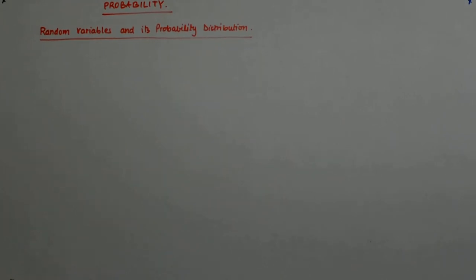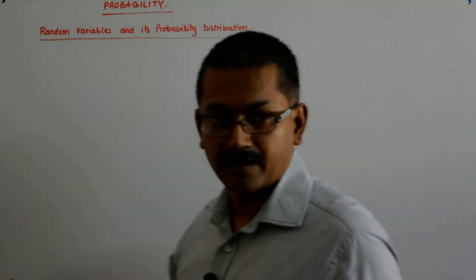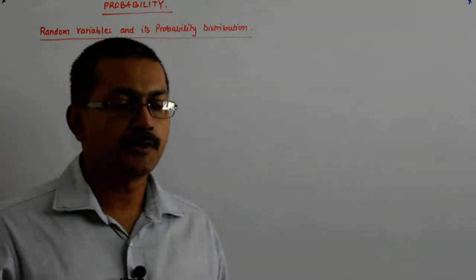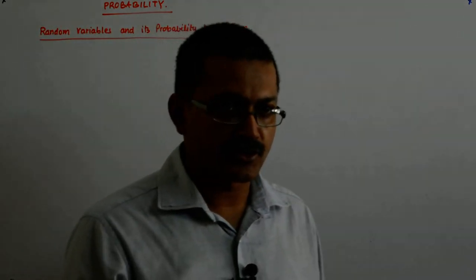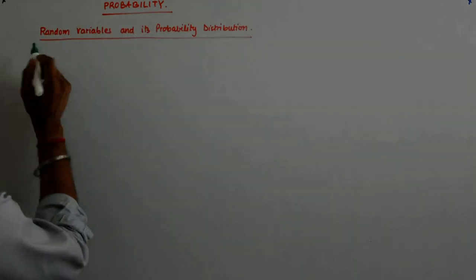Sorry for disturbing. So, we defined the random variable part. Now, we go on to define the probability distribution of a random variable.